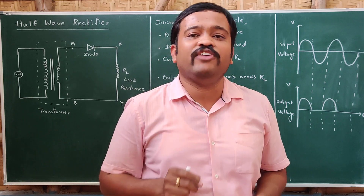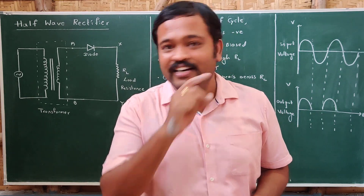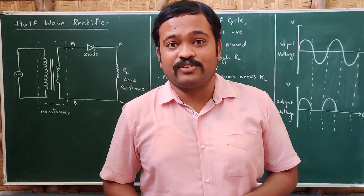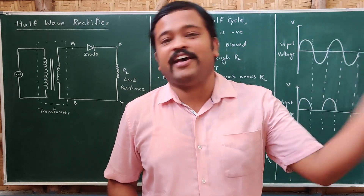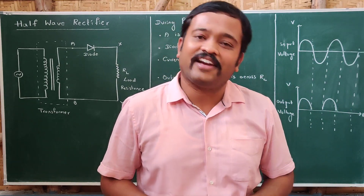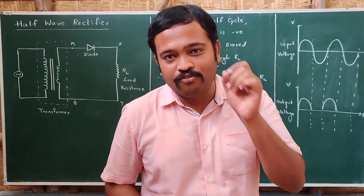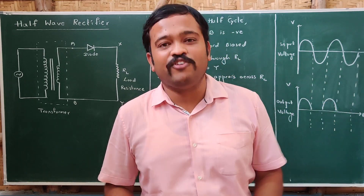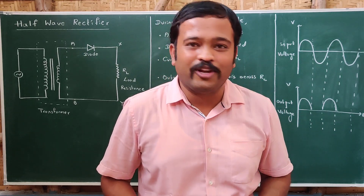The device we are using in the rectifier circuit is the diode. Why are we using a diode? Because a diode allows current in only one direction, and that property is used in the rectifier. Rectifiers are of two types: one is the half wave rectifier and another one is the full wave rectifier, and we will be studying both today.